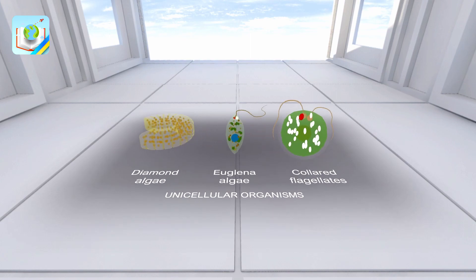Single-celled eukaryotes with a plant-based diet are classified as single-celled algae.